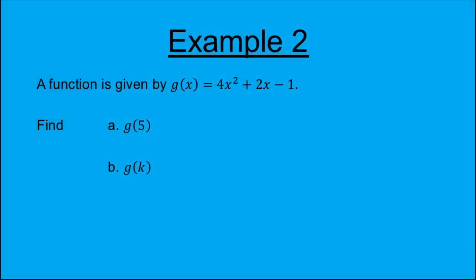Example 2. A function is given by g of x equaling 4x squared add 2x subtract 1. Find part a, g of 5, part b, g of k.